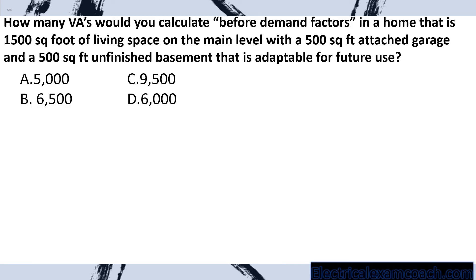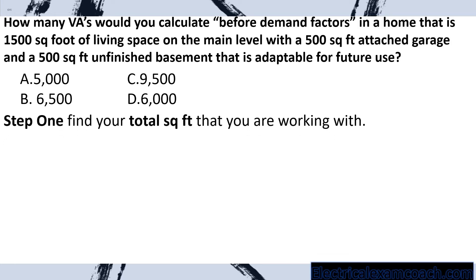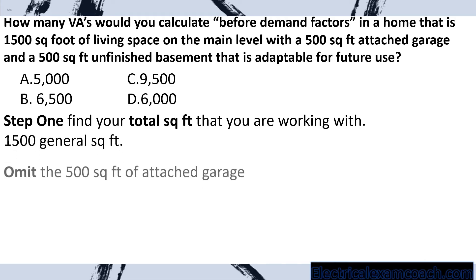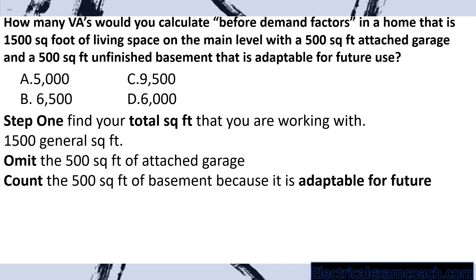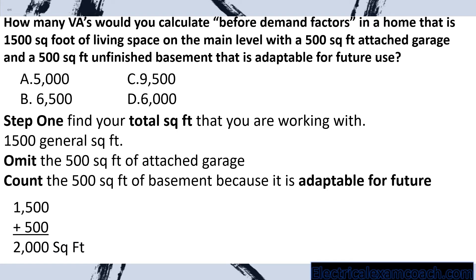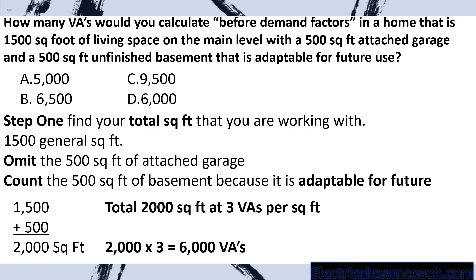How many VAs would you calculate before demand factors in a home that is 1,500 square feet of living space on the main level, with a 500 square foot attached garage and a 500 square foot unfinished basement that is adaptable for future use? Step one: find our total square feet. We count the 1,500 general square feet. We omit the 500 square foot attached garage. We count the 500 square foot basement because it is adaptable for future use. That gives us 2,000 square feet. Then we take 2,000 square feet multiplied by three VAs per square foot and select answer D.